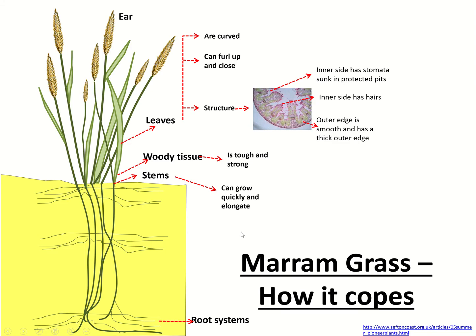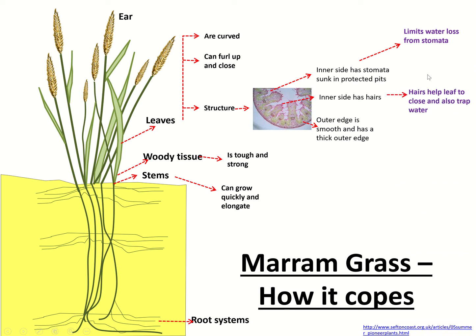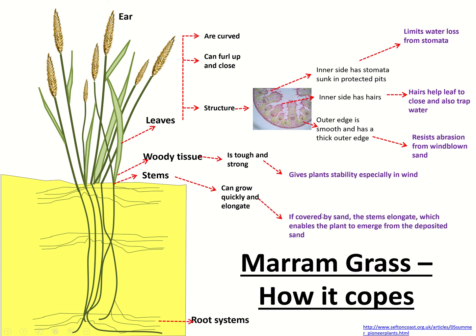One plant that can cope with those conditions is marram grass, and it has lots of adaptations. The inner side of the leaves has stomata sunk in protective pits, which limits water loss. There may be tiny hairs that help the leaf to close and trap water. They have a smooth, thick outer edge which resists abrasion from windblown sand. The woody tissue is tough and strong to cope with wind, and the stems can grow quickly and elongate to cope with coverage by sand. The root systems tap deep into the ground so they can cope with aridity — which is why if you ever tried to pull marram grass out of a sand dune, you'd find it very difficult.